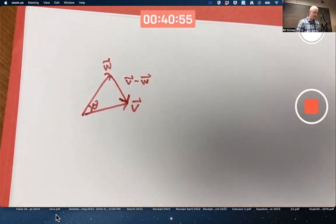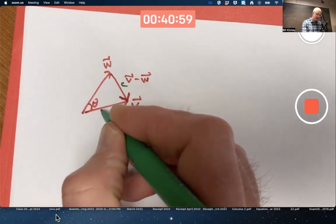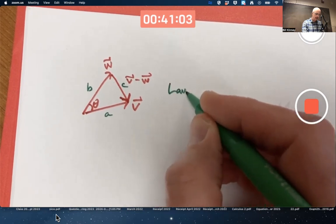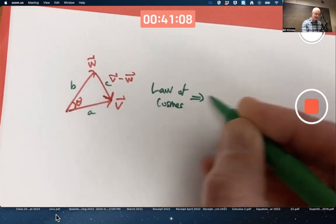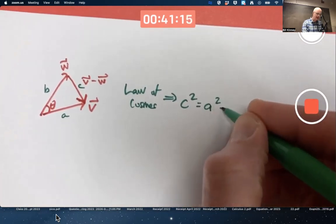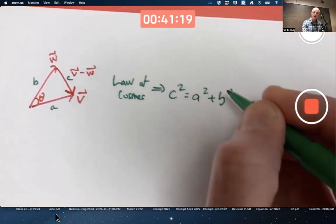What does the law of cosines say? If I label this side C, this side A, and this side B, the law of cosines implies that C squared equals A squared plus B squared, as if it were the Pythagorean theorem, but it's not necessarily a right triangle.